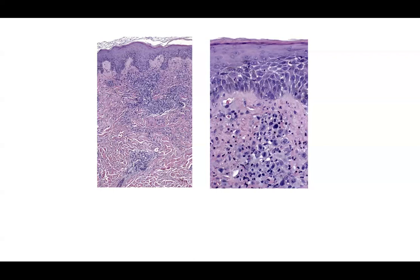Those are the types typically tested on board exams. You cannot tell from H&E alone — you need clinical context and process of elimination. Lymphomatoid papulosis can involve superficial, mid, and deep dermis, sometimes in a sheet-like or nodular growth pattern, but the key feature is CD30-positive cells.